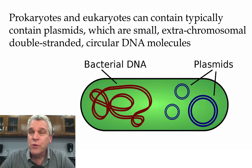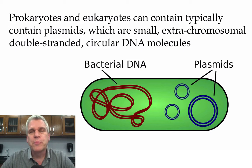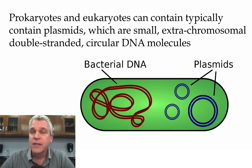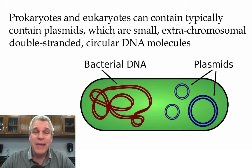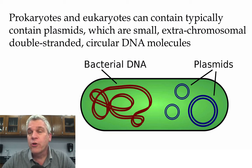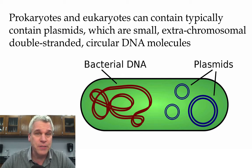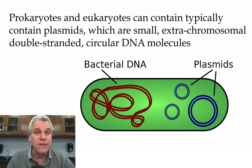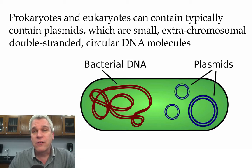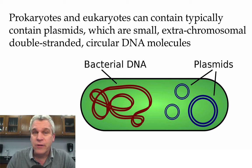We know that prokaryotes and some eukaryotes can contain plasmids. Now, these are small, extra-chromosomal, double-stranded, circular pieces of DNA molecules. So, for instance, in a bacterium, they have one chromosome, but they could have several small plasmids. There would typically be a handful of genes on these plasmids, which can be passed on from one generation to the next.